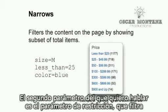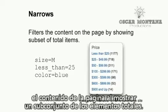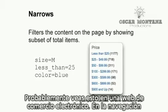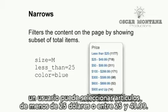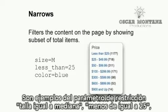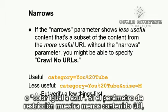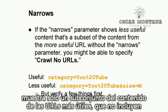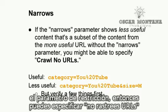The second parameter I'd like to cover is the Narrows parameter. Narrows filters the content on the page by showing a subset of the total items. You probably see this on an e-commerce site where a user can select to see only items less than $25, or $25 to $49.99. Examples of the Narrows parameter are size equals medium, less than equals 25, or color equals blue. If the Narrows parameter shows less useful content — just a subset of content from the more useful URL that doesn't include the Narrows parameter — then you might be able to specify 'crawl no URLs.'